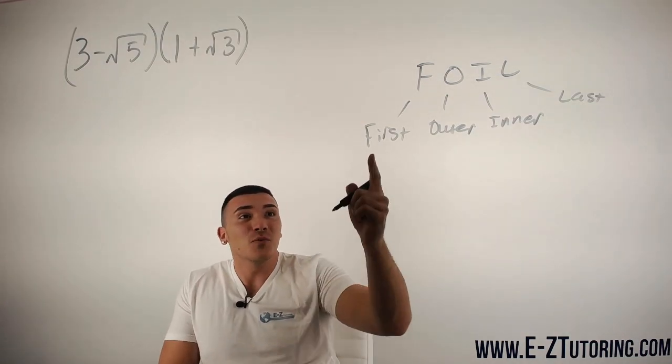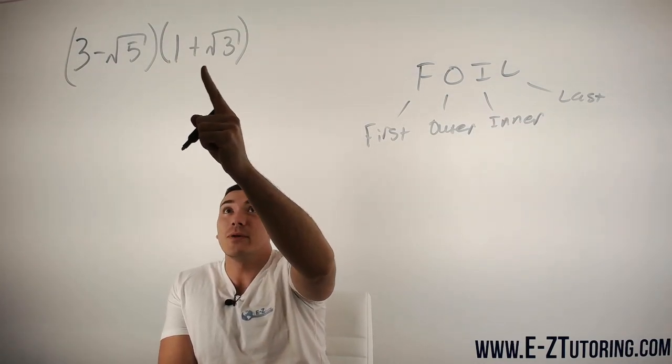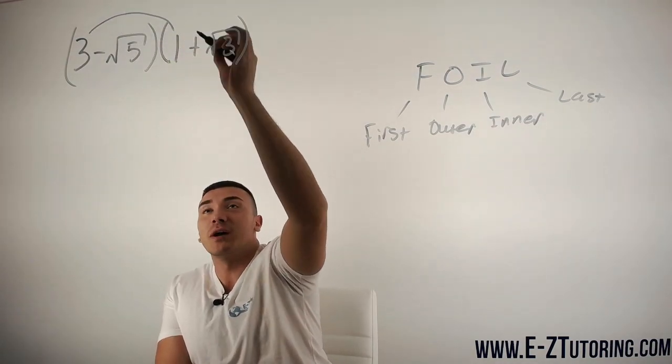Alright, so let's start with the first terms. The first term of this binomial is 3, the first term of this binomial is 1, we multiply 3 and 1 which gives us 3.